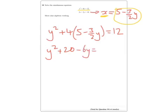Minus 6y equals 12. Rearrange that, we get y squared minus 6y equals, sorry, plus 8 equals 0.